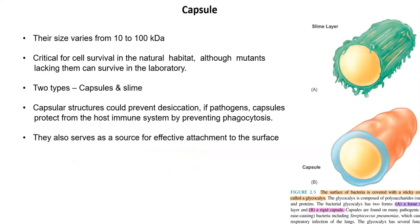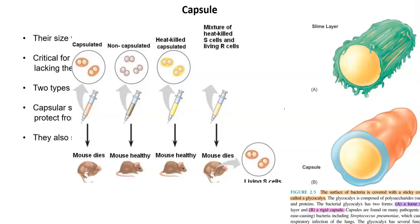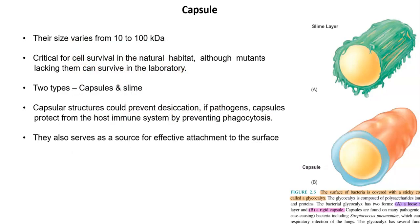Next, we look at capsule biosynthesis in the cell. Capsule size generally varies from 10 to 100 kilodaltons. Capsules are very important for cell survival in their natural habitat; however, mutant cells without capsules can survive in the laboratory. The classical example is Streptococcus pneumoniae, used in transformation experiments, varying in the presence and absence of capsules. Capsules and slime differ in thickness. Capsular structures can prevent desiccation, and in pathogens such as Streptococcus pneumoniae, capsules protect them from host immune system responses.